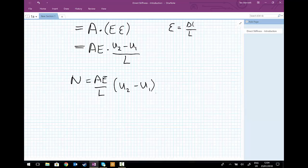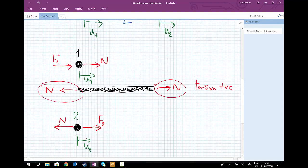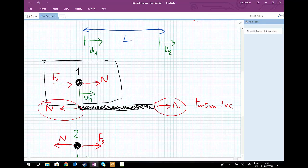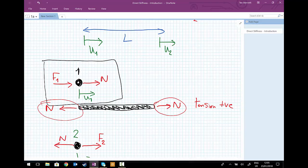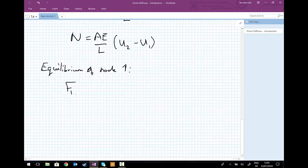So now we have this. What we're going to do is consider the equilibrium of the nodes themselves in isolation. So having a look at now this free body diagram for node one, we're going to consider the equilibrium. So we know that F1 plus N must be equal to zero. So we write that down. Equilibrium of node one gives us.